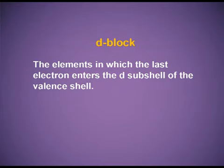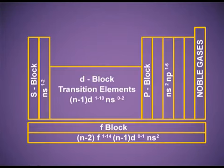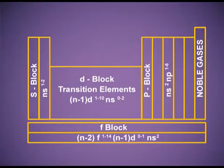The D block elements are those in which the last electron enters the D subshell of their valence shell. The D block elements are placed between the S and P blocks and are also known as transition elements. They are called transition elements because the S block elements are metals and the P block elements are mainly non-metals, and the shift from metallic to non-metallic behavior occurs through the D block. Their electronic configuration is (n-1)d¹⁻¹⁰, ns⁰⁻². Since the D subshell can accommodate 10 electrons, there are 10 groups in the D block.